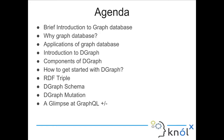Then comes the actual topic, Introduction to DGraph, where I will tell you about DGraph and how it came to be. Next is the components of DGraph — there are three components required to run it. Next is how to get started with DGraph. Then RDF triple, which is basically the data structure on which DGraph works. Next would be schema and mutation in DGraph, which are the building blocks. And finally, a glimpse of GraphQL plus minus — I will show one query but not deep dive, as it is a really big topic in itself, possibly for my next session.